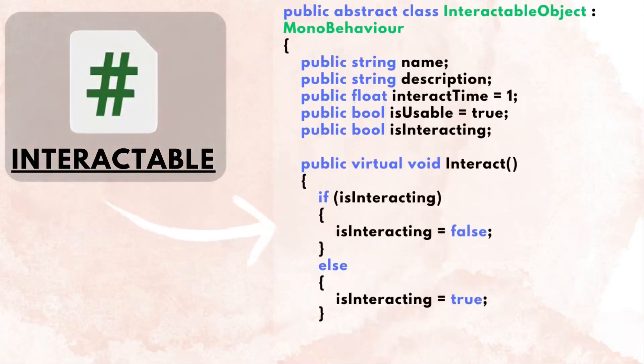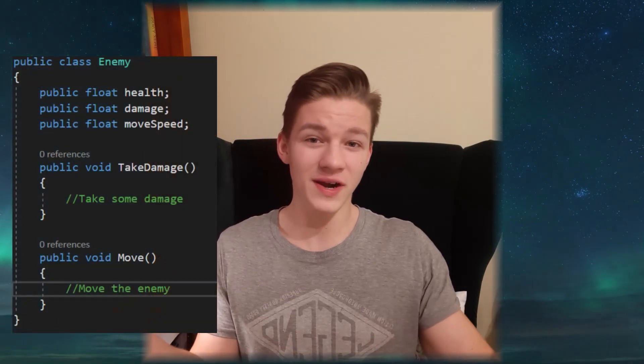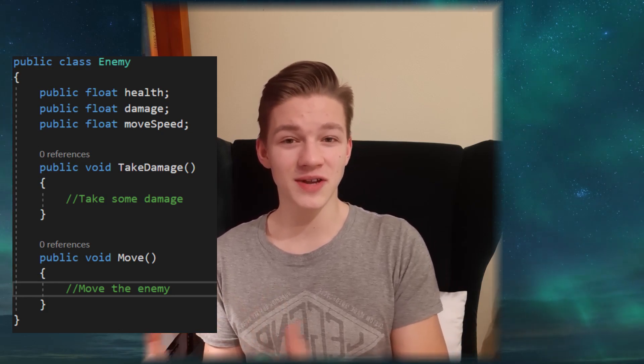The base class holds data that is the same for all classes deriving from it, but child classes can also add their own functions and variables. This can be used for enemies — for all enemies you probably want some health, an attack function and some movement, but each individual enemy may have some things different.